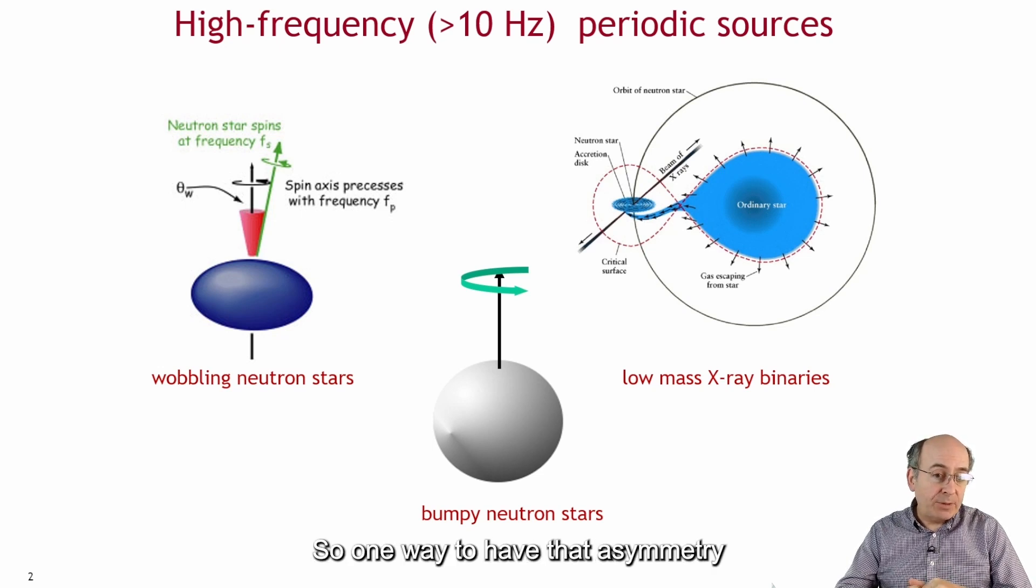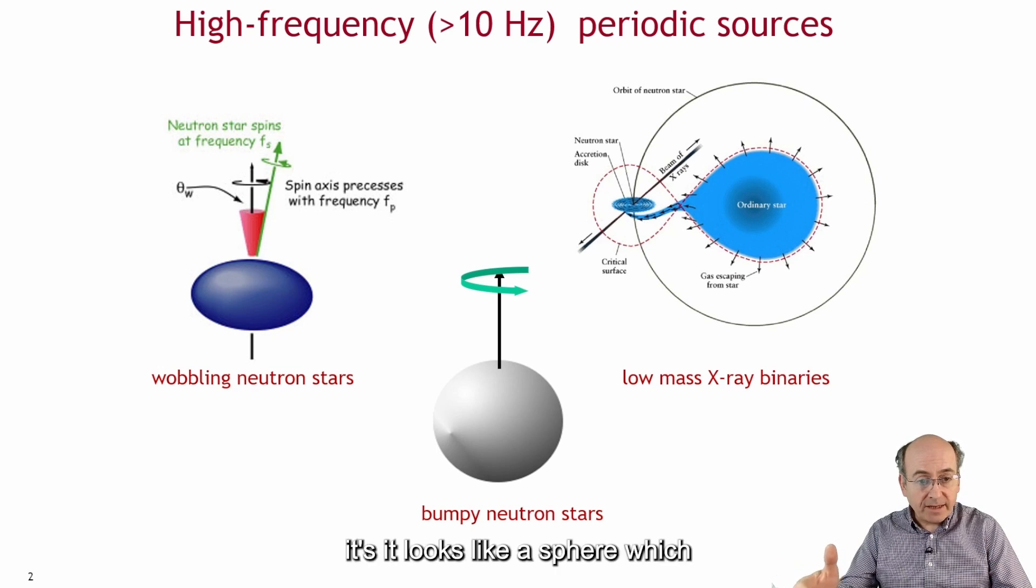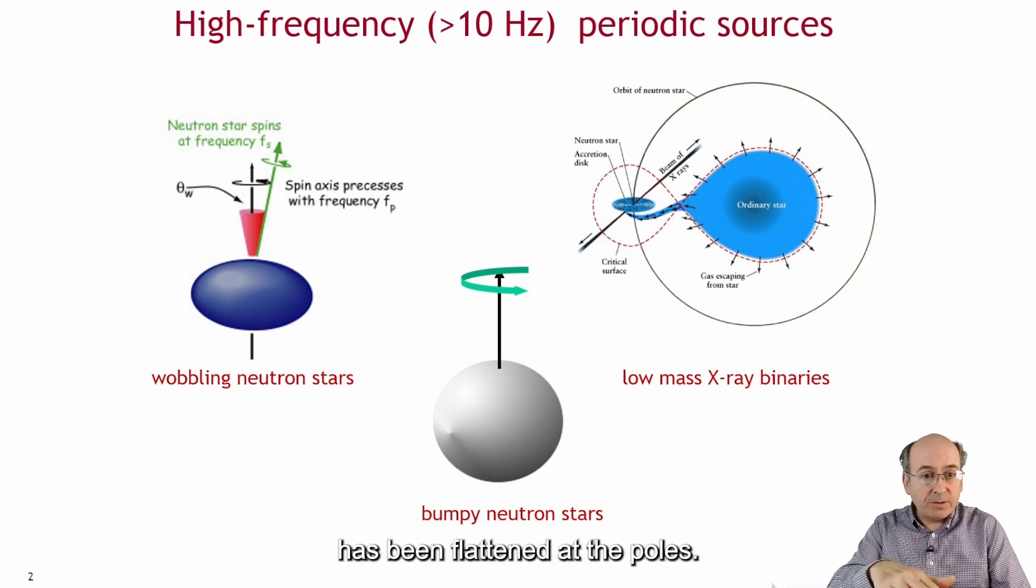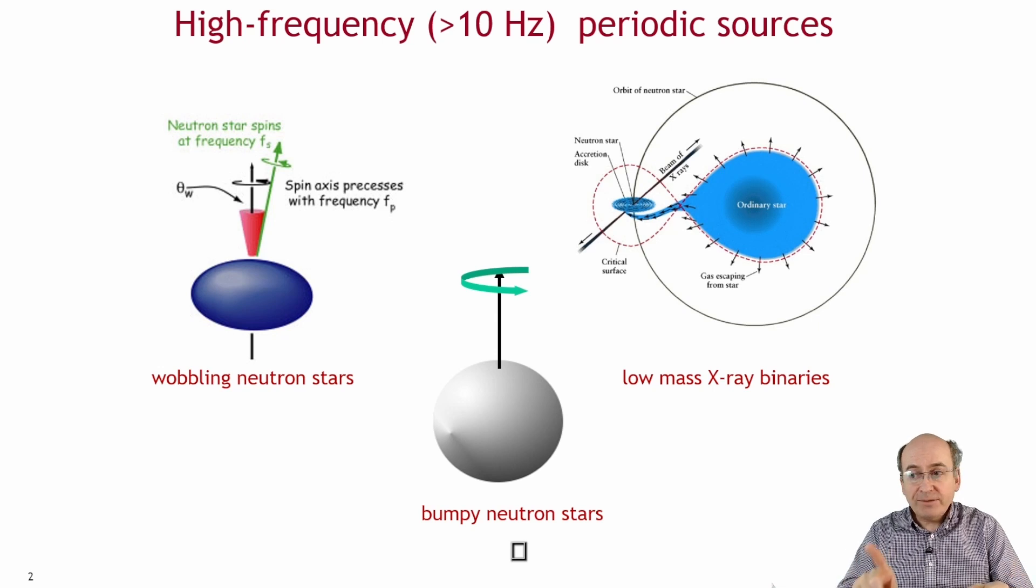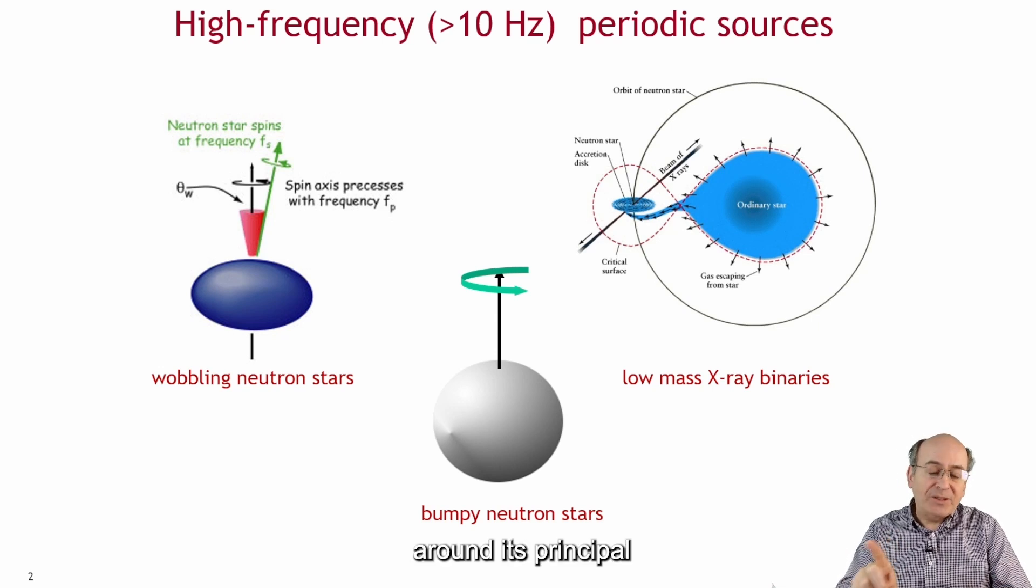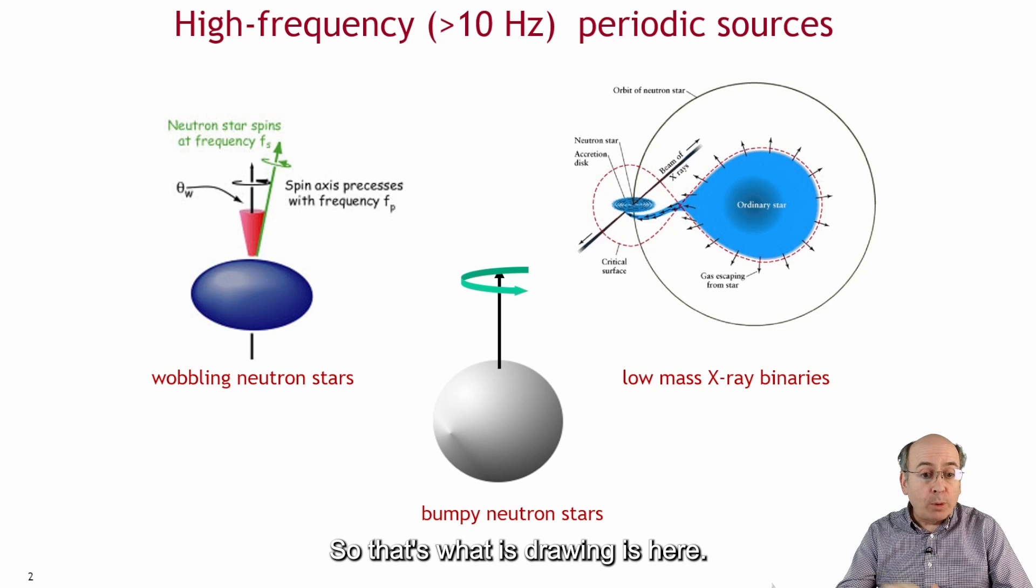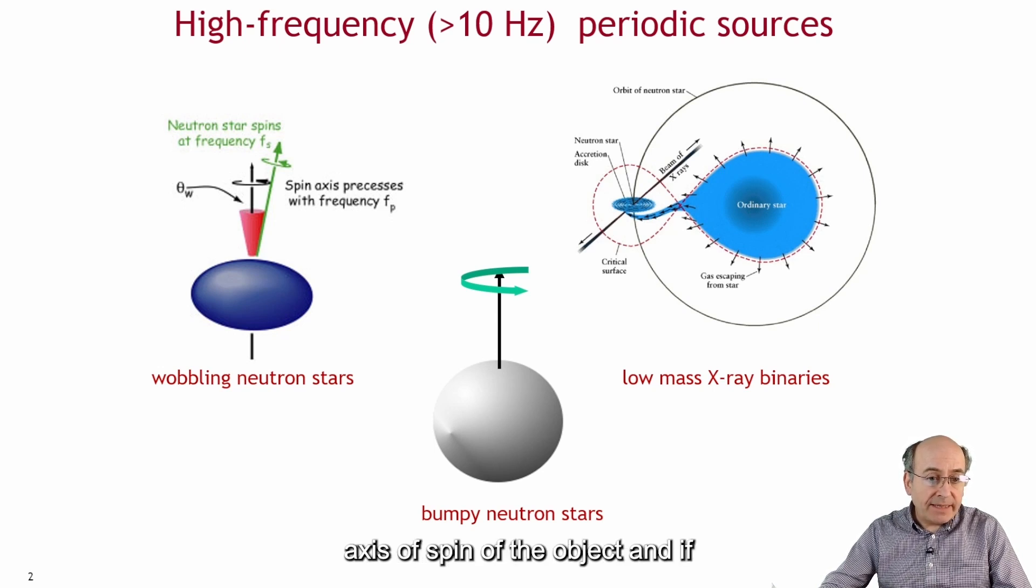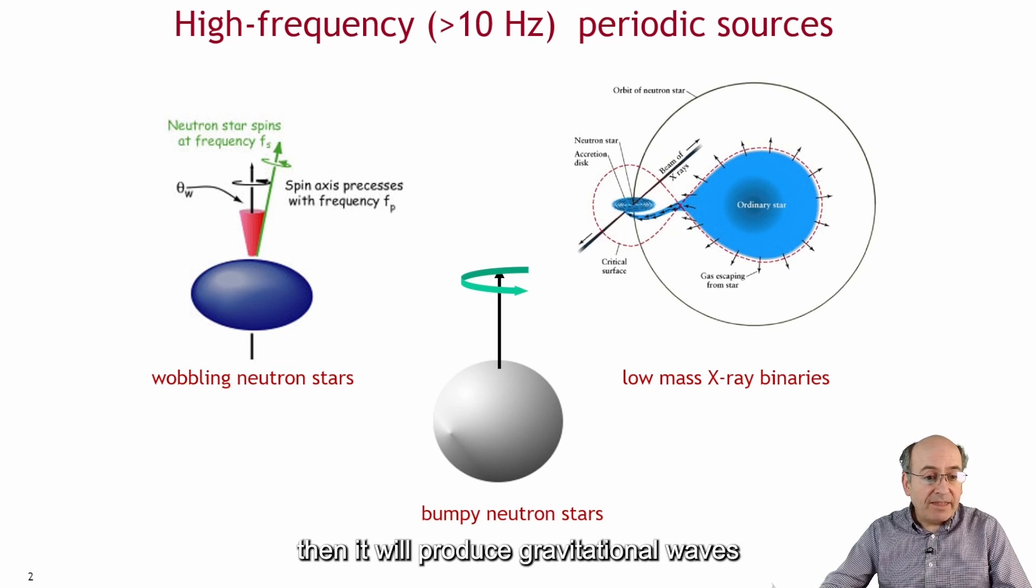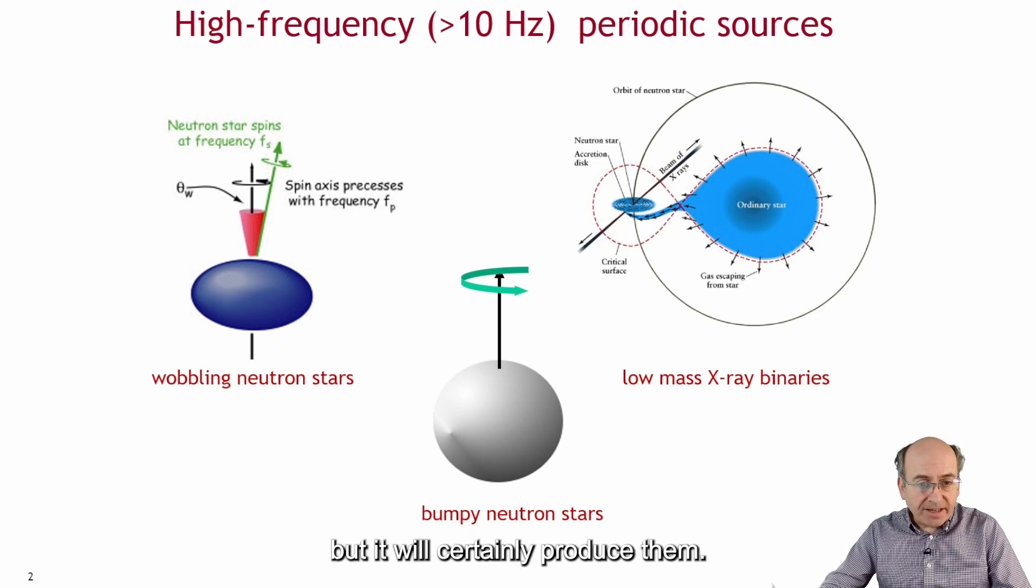So one way to have that asymmetry is to have a neutron star which maybe is oblate for one reason or another. In other words, it looks like a sphere which has been flattened at the poles. But if that oblate neutron star is not actually rotating around its principal axis of the moment of inertia ellipsoid, then it will wobble. Now it may not produce them for long, but it will certainly produce them.